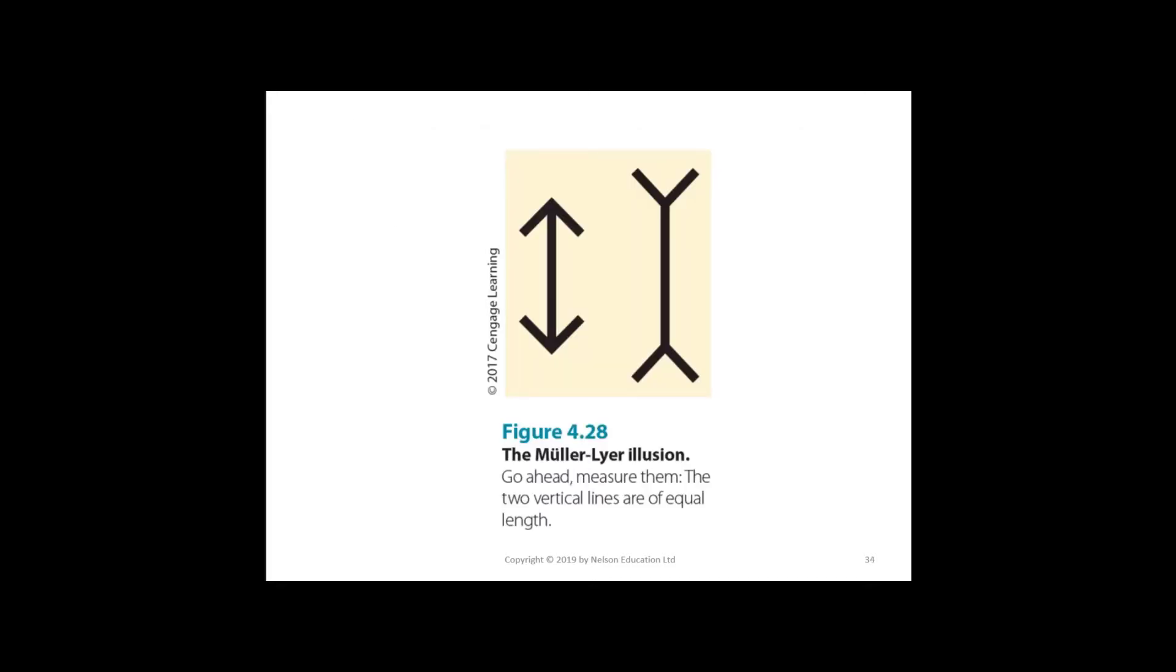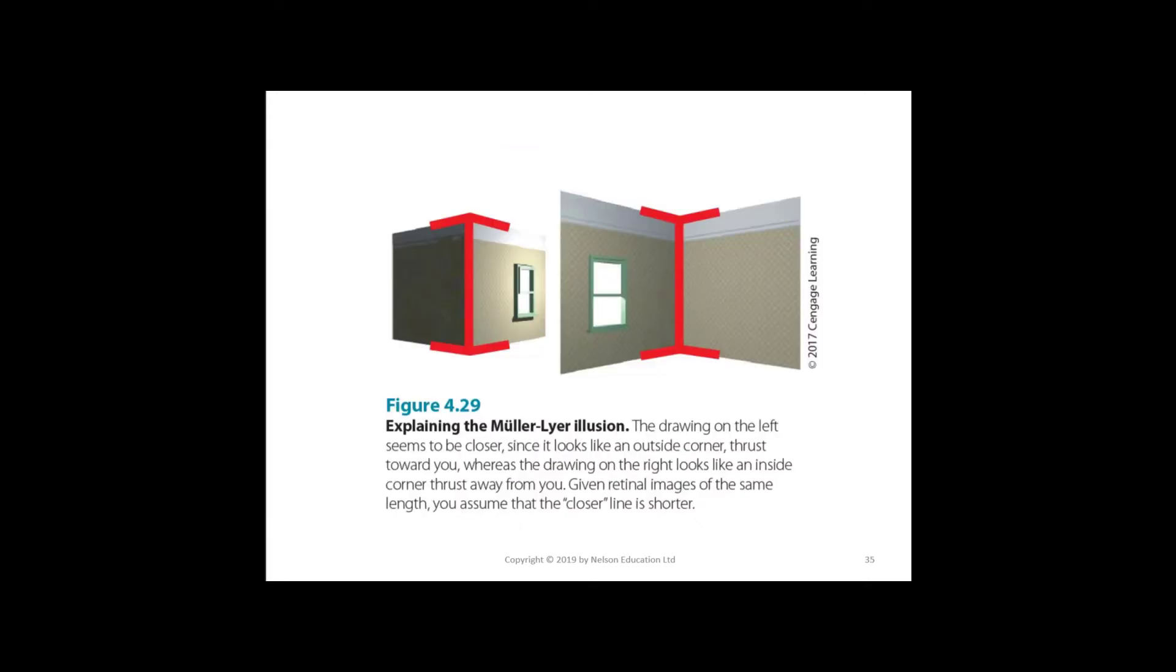In the Müller-Leyer illusion, measure these two lines and you'll see that the two vertical lines are exactly equal in length. The drawing on the left seems to be closer since it looks like an outside corner thrust towards you, whereas the drawing on the right looks like an inside corner thrust away from you. Given retinal image of the same length, you assume that the closer line is shorter.